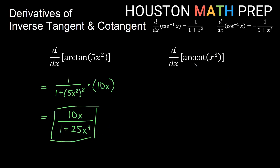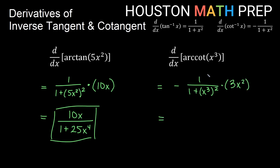For the last example, the derivative of arccotangent of x cubed, we use the negative formula: negative 1 over 1 plus x cubed, all squared. The chain rule gives times the derivative of the inside — by the power rule, the 3 comes out front and the power drops by 1, giving 3x squared. Cleaning this up, we get negative 3x squared on top and 1 plus x to the 6 on the bottom.